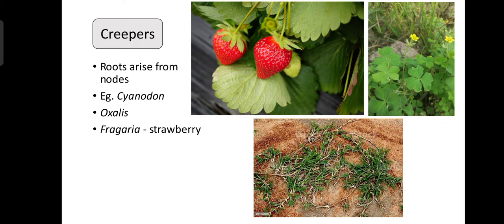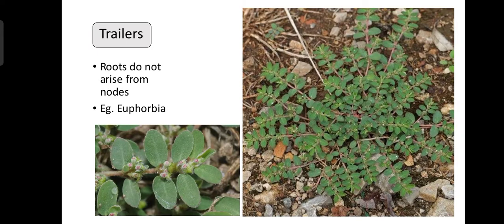Examples of creepers are runners and stolons, and in creepers roots arise from their nodes. Trailers are different from creepers in that roots do not arise from their nodes. The example of a trailer is Euphorbia serpens.